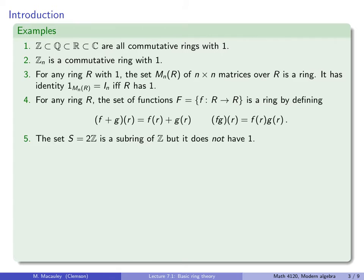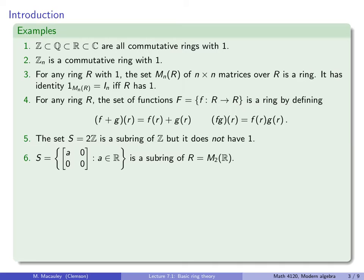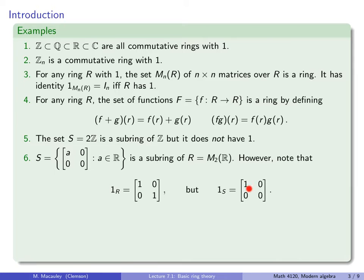Example 5: the set 2Z is a subring of Z, but it does not have an identity element because it does not contain 1. So if you look at n×n matrices over this ring, those will not have an identity element either. Example 6: let S be the set of 2×2 real-valued matrices where only the upper left-hand corner is allowed to be non-zero — that is a subring of M_2(R). This example is important because it shows that a subring S of a larger ring R can both contain identity elements, but those identity elements can be different.